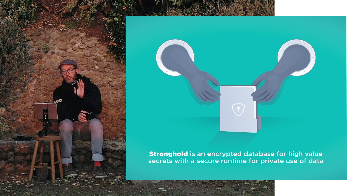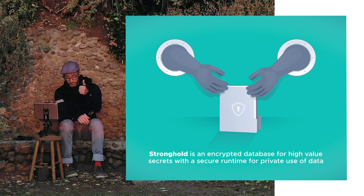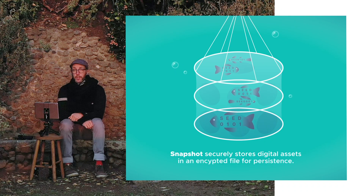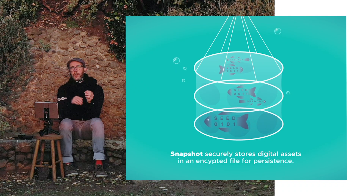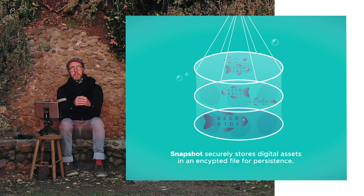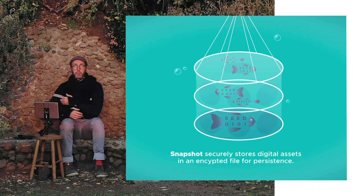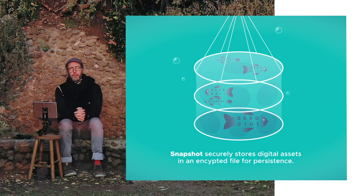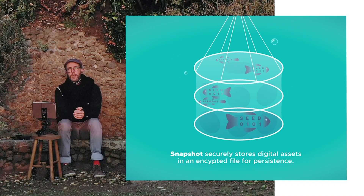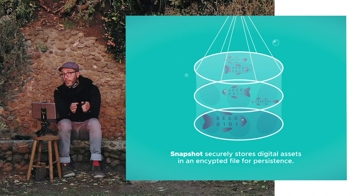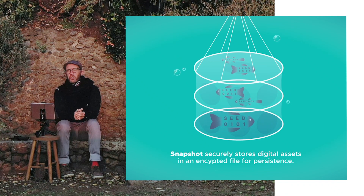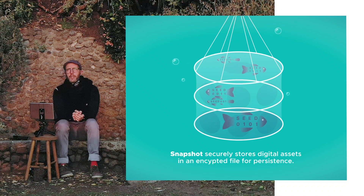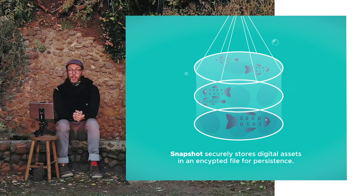I'm going to give you a quick rundown. Number one: Stronghold securely stores digital assets persistently in the snapshot. You have to think of the snapshot as basically a thing on your file system that helps Stronghold to set itself back up again. The snapshot itself is not yet finished — it will, in the very near future, be error-corrected, which means if something happens and it gets a small corruption, it might be able to fix itself. You don't want to lose your data, and we're working really hard to make sure that doesn't happen.